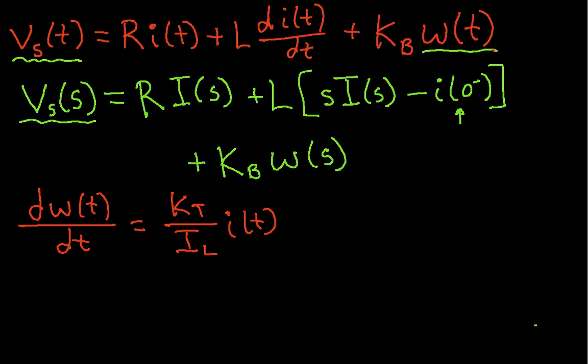Okay. Well, taking the unilateral Laplace transform of this equation, I'm going to have s times omega s minus omega 0 minus is equal to kt IL times I of s.